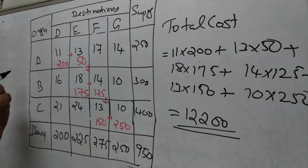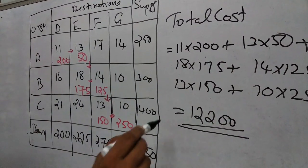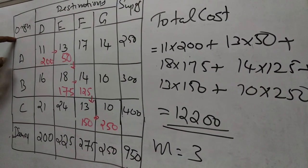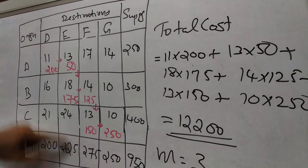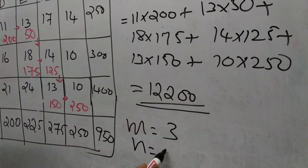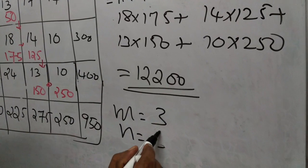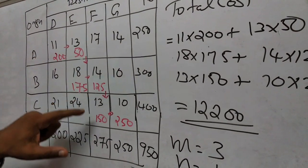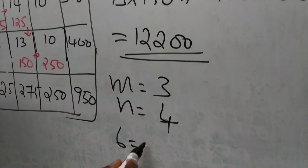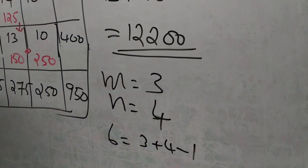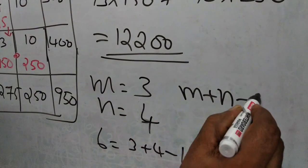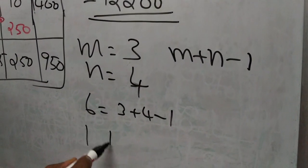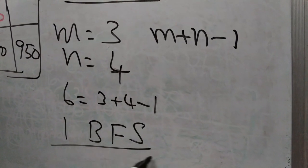One more thing: there are 3 rows, M equals 3, and 4 columns, N equals 4. The number of allocations is 6, which equals M plus N minus 1, that is 3 plus 4 minus 1 equals 6. That condition is satisfied here. Therefore this is an initial basic feasible solution.